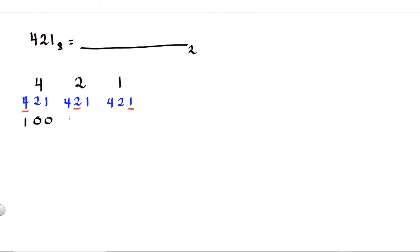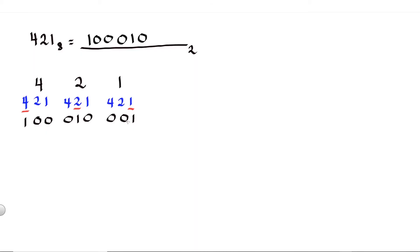For digit 2: we don't use 4 — so this is 0; we use 2 — so this is 1; we don't use 1 — so this is 0. For digit 1: we don't use 4 and 2 — so these are 0; and we do use 1 — so this is 1. The binary equivalent of 421 octal is 100 010 001.